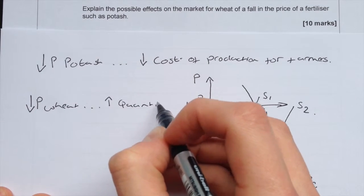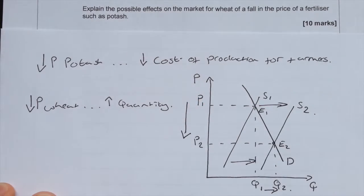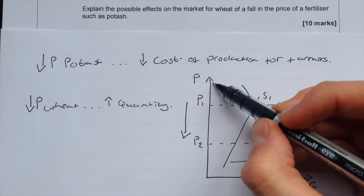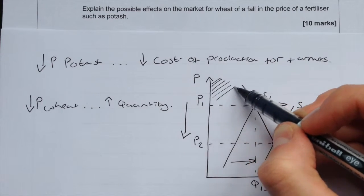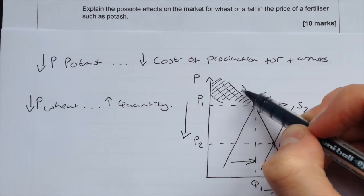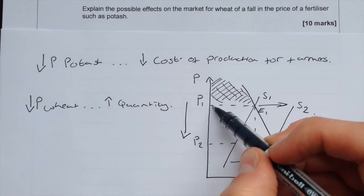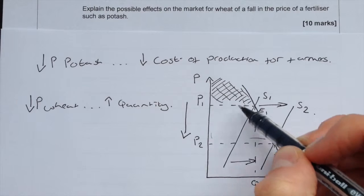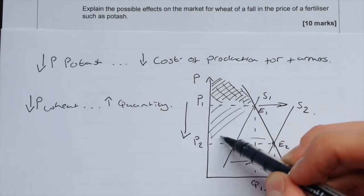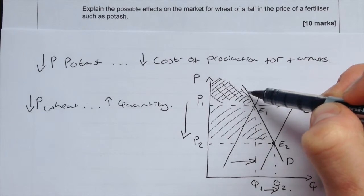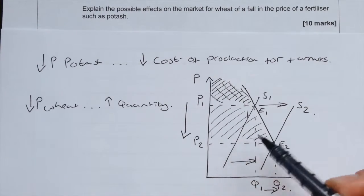This massively increases the amount of consumer surplus. Before, our consumer surplus was this area here, whereas now it includes this area and also this area as well, because our consumers are willing to pay their demand curve but they're actually only paying P2.